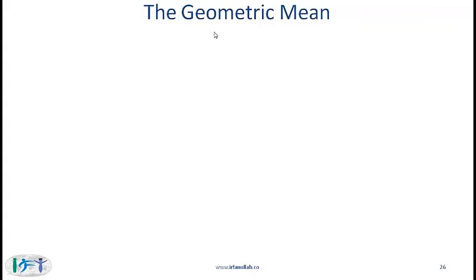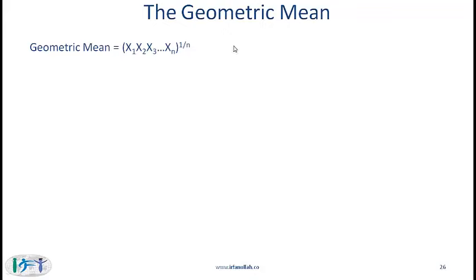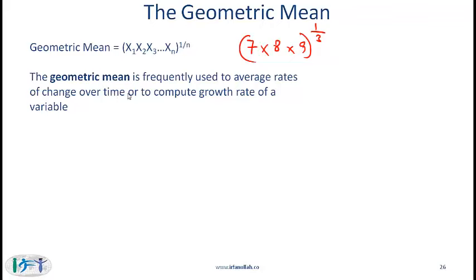The geometric mean of n numbers is simply the product of the n numbers raised to the power of 1/n. So the geometric mean of 7, 8, and 9 is (7 × 8 × 9)^(1/3). The geometric mean is frequently used to average rates of change over time or to compute the growth rate of a variable — for instance, to compute the average interest rate over a given period, which is what we did when computing the time-weighted rate of return in the previous reading.